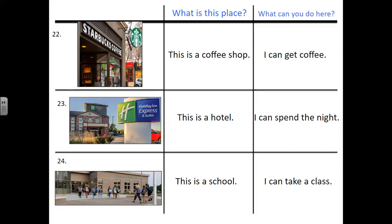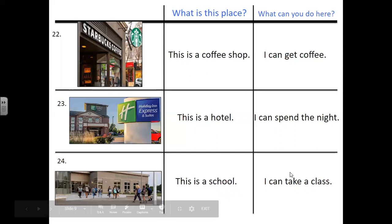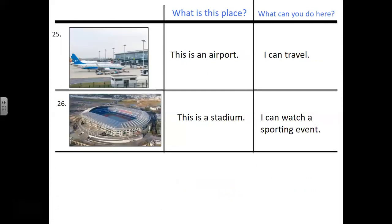Number twenty-four. What is this place? This is a school. What can you do here? I can take a class. Number twenty-five. What is this place? This is an airport. What can you do here? I can travel. And number twenty-six. What is this place? This is a stadium. What can you do here? I can watch a sporting event.